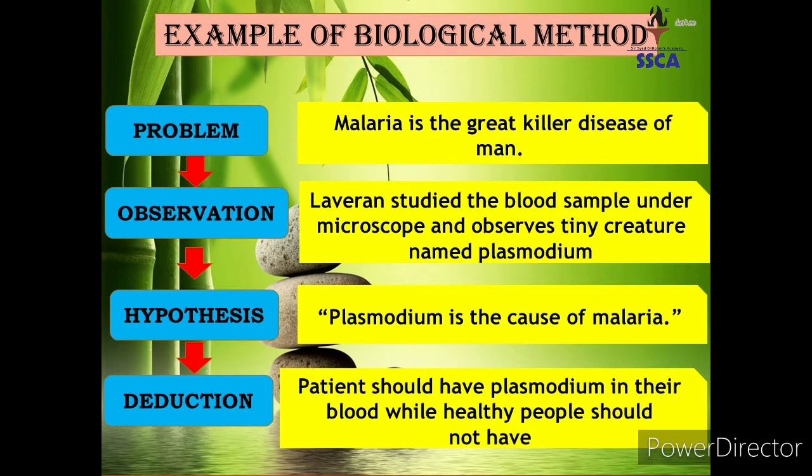Now let's see an example of biological method. A most common example of malaria is taken here. Malaria is a great killer disease of man — it's a biological problem. इस problem को sort out करने के लिए scientists ने biological method को follow किया। A famous scientist, Lavaran, collected blood samples from malaria patients and observed them under a microscope. उसे blood में tiny creatures मिले जिनको उसने plasmodium नाम दिया — यही हमारी observation है۔